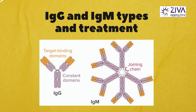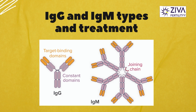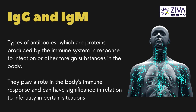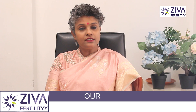Immunoglobulin G and Immunoglobulin M — IgG and IgM — are types of antibodies, which are proteins produced by the immune system in response to infections or other foreign substances in the body. They play a very important role in the body's immune response and can have significance in relation to infertility in certain situations.